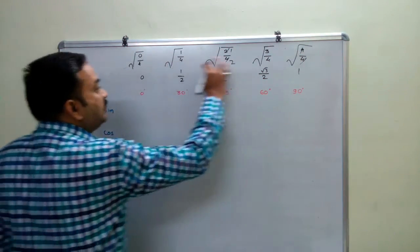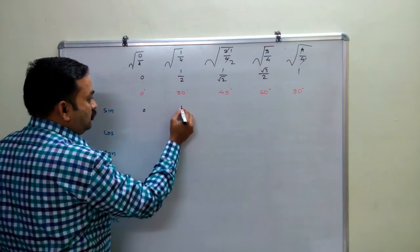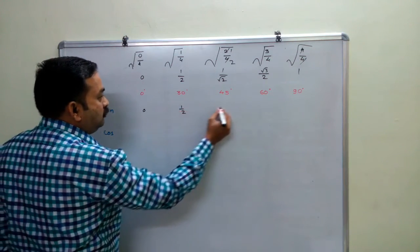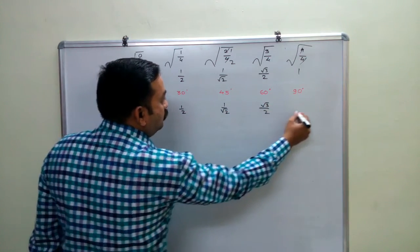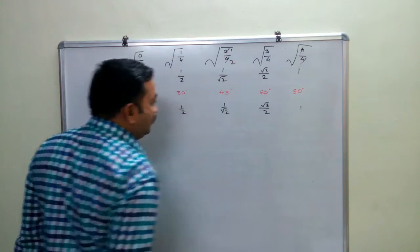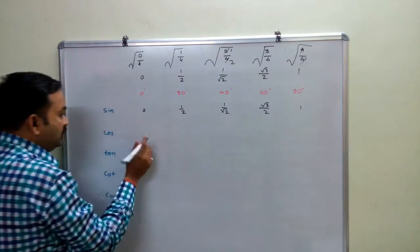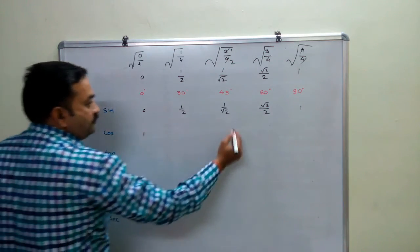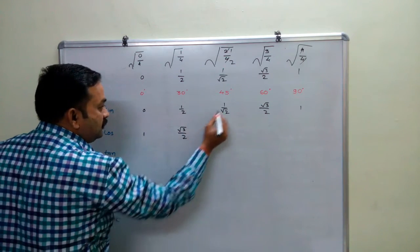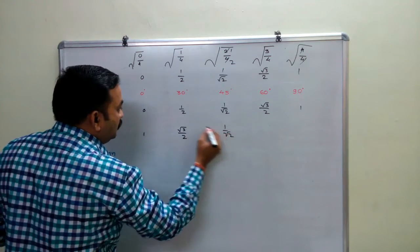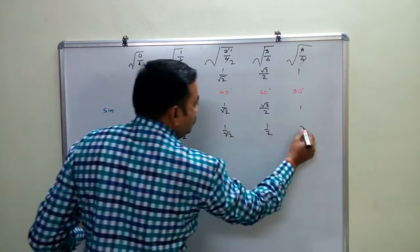The numbers we got are: 0, 1/2, 1/√2, √3/2, and 1. These same numbers you write for the sin row. For the cos row you write them in reverse: 1 here, √3/2 here, 1/√2 here, 1/2 here, and 0 here.